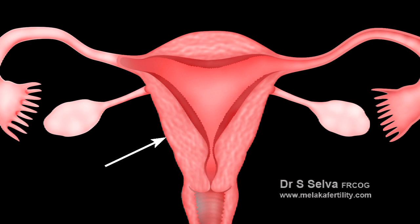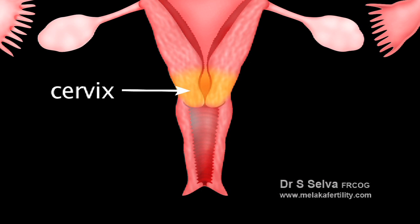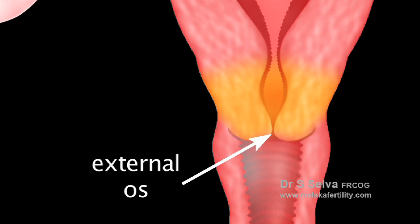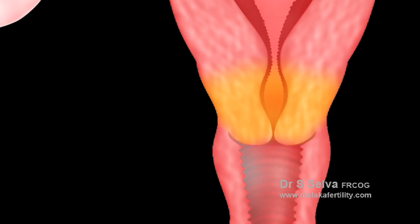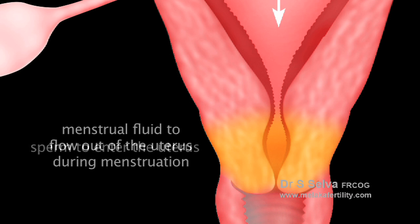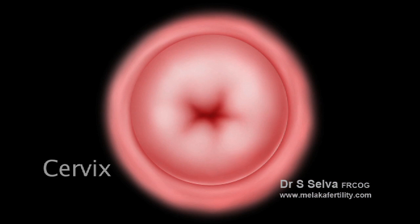The outermost layer of the uterus is the serosa, also known as the perimetrium. The cervix is a lower constricted segment of the uterus that joins the upper part of the vagina. The small cervical opening into the vagina is called the external os, while the one in the uterine cavity is called the internal os. They allow sperm to enter the uterus during sexual intercourse and menstrual fluid to flow out during menstruation. The cervix can be visualized from the vagina.